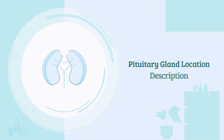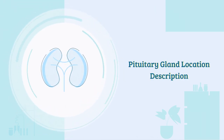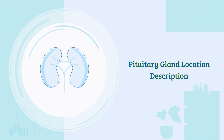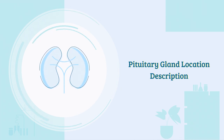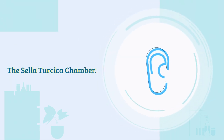Here are some key details about the pituitary gland. Location: the pituitary gland sits at the base of the brain, just below the hypothalamus. It occupies its own little chamber called the sella turcica.